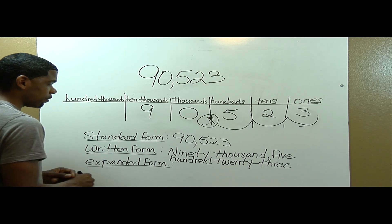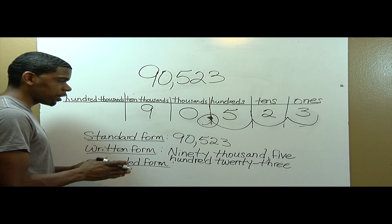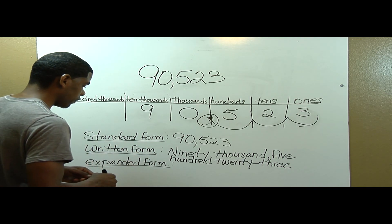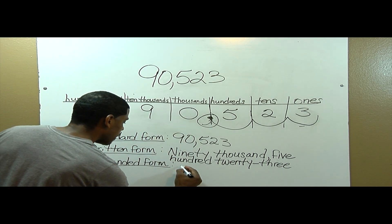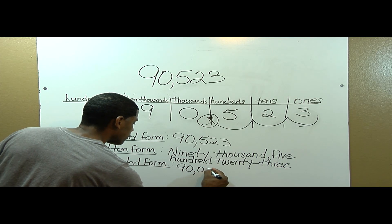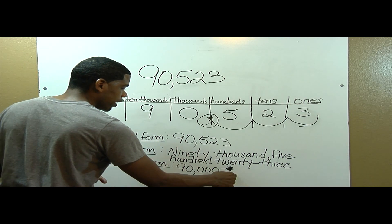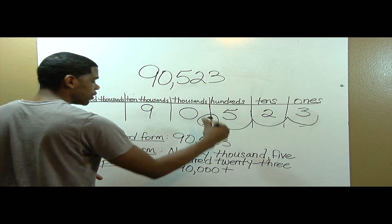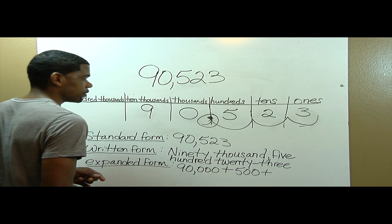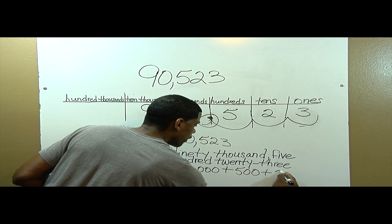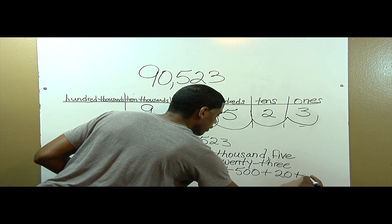The next thing I need to do is write expanded form. Expanded form is where we use a plus sign to show that the number is expanding or getting larger. What I need to write is nine ten-thousands, which is ninety thousand, plus zero thousands — so I don't write anything for thousands. I have five hundred, so I'll write five hundred, plus two tens, which is twenty. And lastly, three ones — simply write the number three.